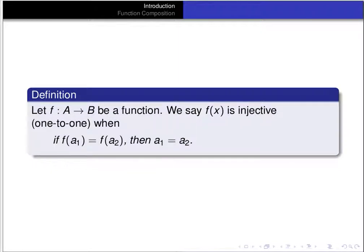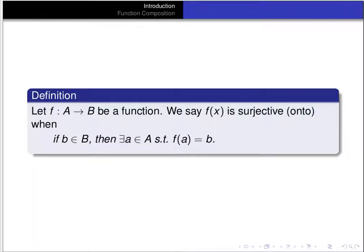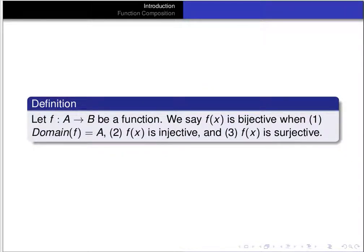If f from A to B is a function, we say f is injective, or one-to-one, whenever: if f(a₁) = f(a₂), then a₁ = a₂. We say f is surjective, or onto, when if b is an element of B, then there exists an a in A such that f(a) = b. And we say a function is bijective when the domain of f is all of A, f is injective, and f is surjective — it has to satisfy all three of these conditions.